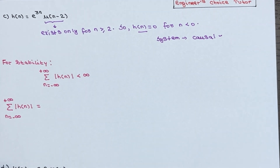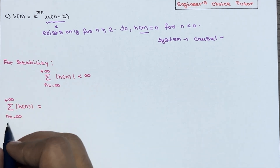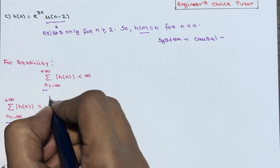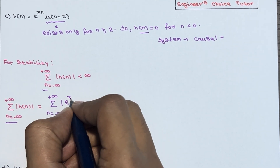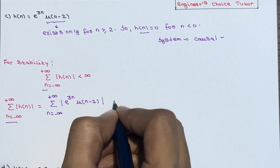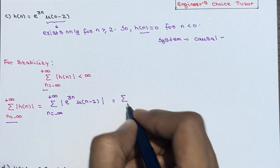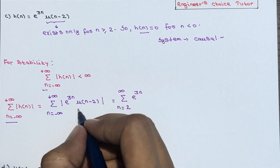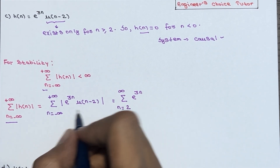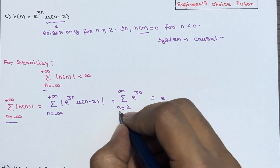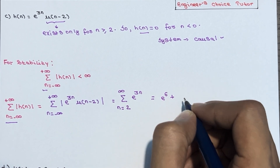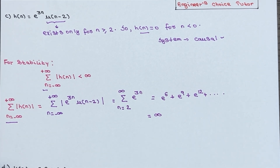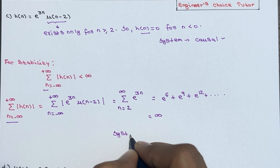Now let's check stability. We evaluate: summation from n = minus infinity to plus infinity of |e^(3n) · u(n-2)|. Since u(n-2) exists only for n ≥ 2, we change the limit to n from 2 to infinity, giving the sum of e^(3n). Plugging in: n=2 gives e^6, n=3 gives e^9, n=4 gives e^12, and this keeps growing — the sum is infinity. Therefore, the system is unstable. So Example 3 is causal but unstable.